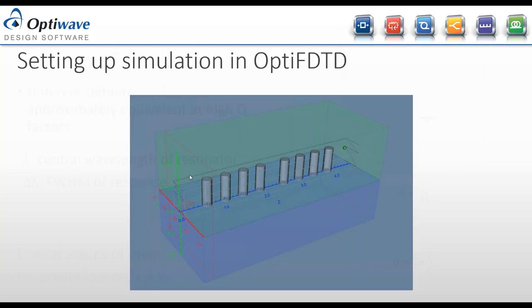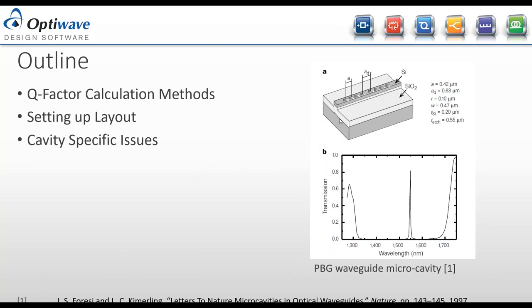We're going to set up the initial design from the paper. The substrate is silica, too far away to affect the simulation. A silicon layer sits on top — the total waveguide height is 0.55 microns. Air holes pass through the full waveguide height of 0.55 microns, with a width of 0.47 microns. The top silicon layer thickness is 0.2 microns.